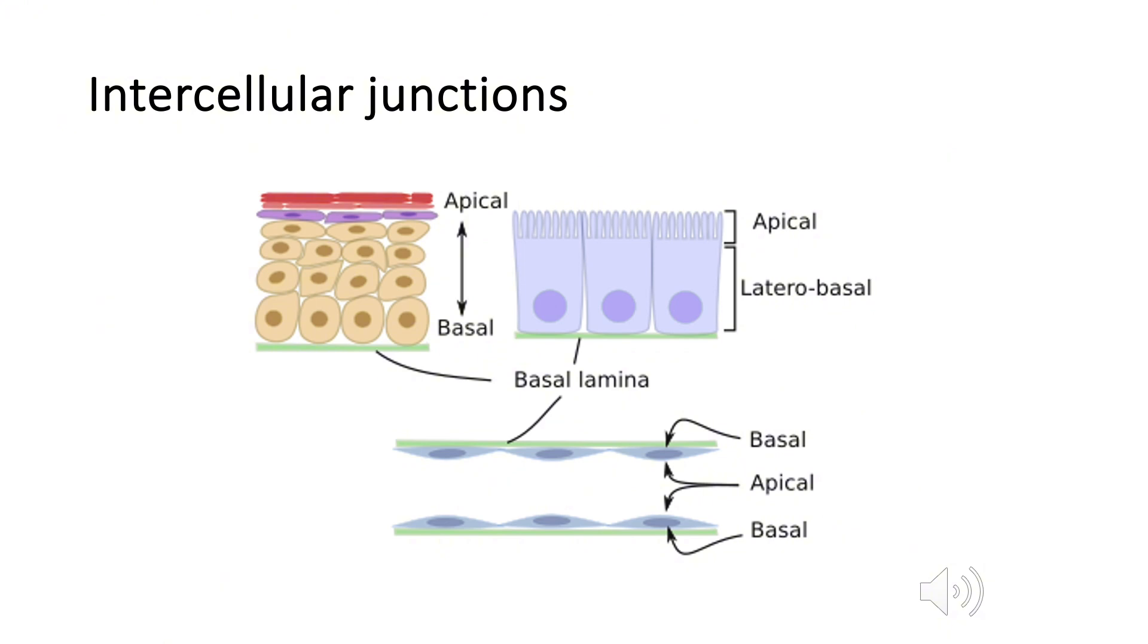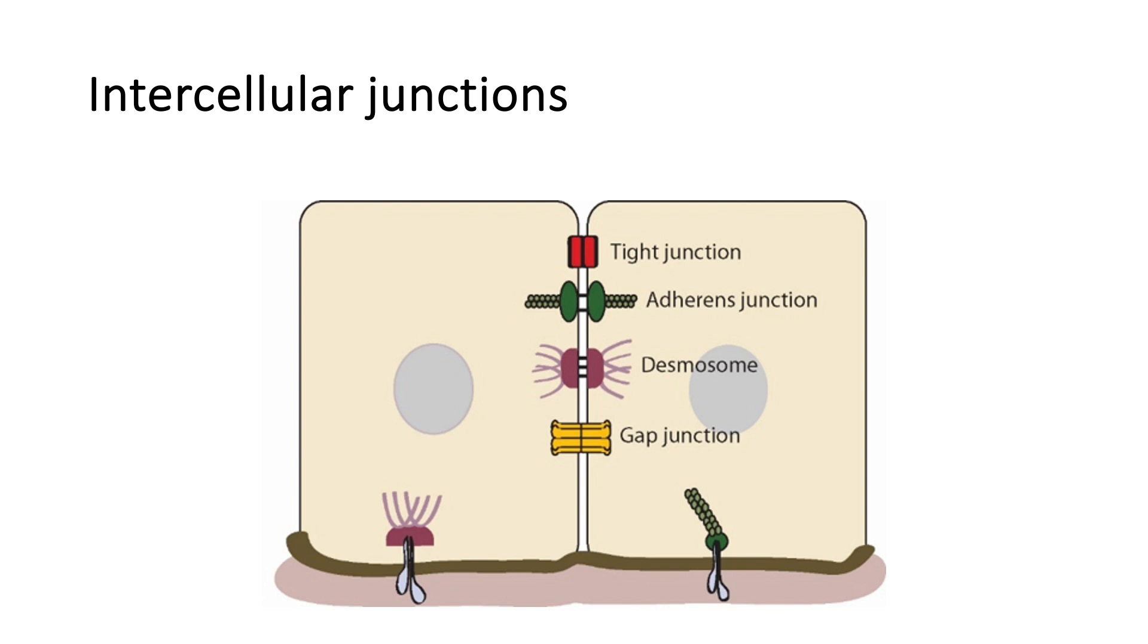Now, if you remember, I mentioned that epithelial tissues have apical and basal domains. Because of that, the lateral domains have to connect to other cells, whilst the apical and basal domains also have to connect. They do this with the help of intercellular junctions.